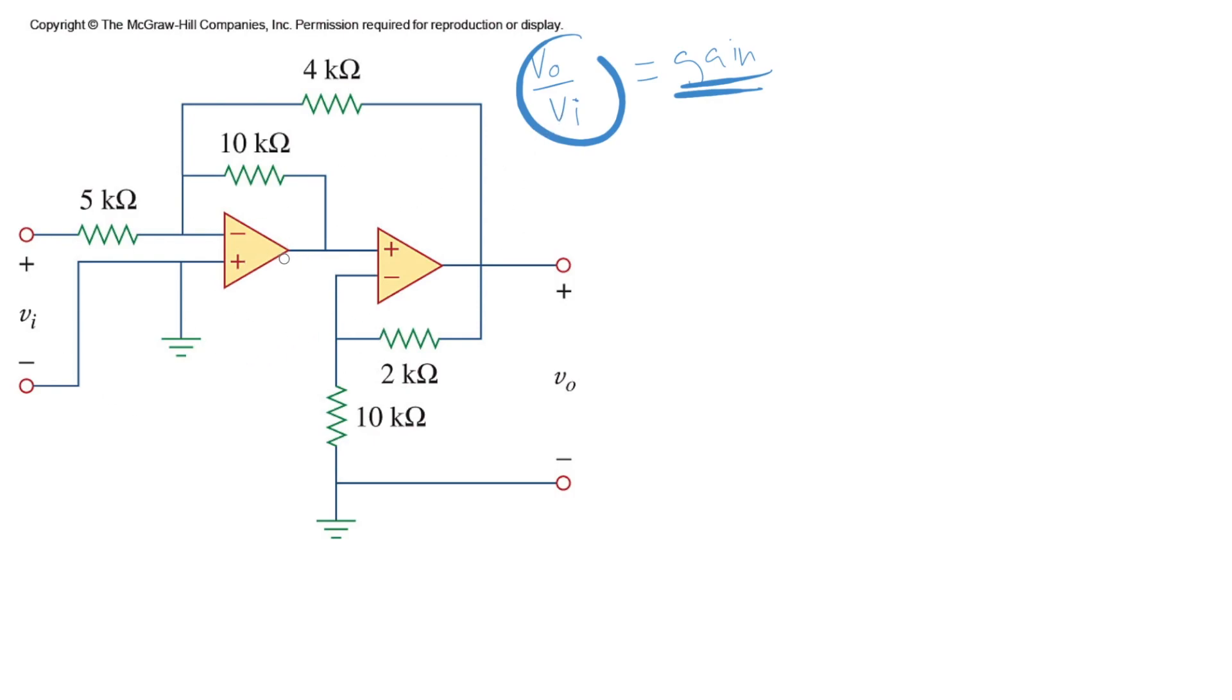Our circuit is comprised of two op amps connected after each other or in a cascade. So when we have cascaded op amps, to not overwhelm ourselves, the first step in solving is to look at the first one.